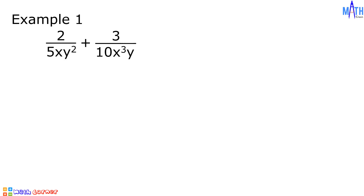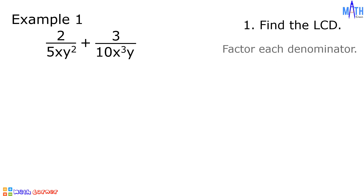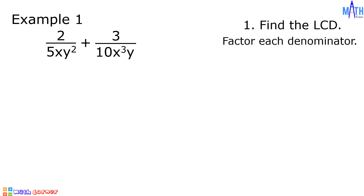Example number one: 2 over 5xy squared plus 3 over 10x cubed y. Step number one, let us find the LCD. To find the LCD, we will factor each denominator. The denominators are both monomial.